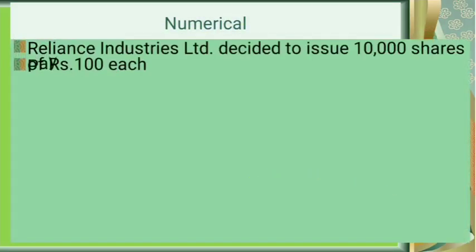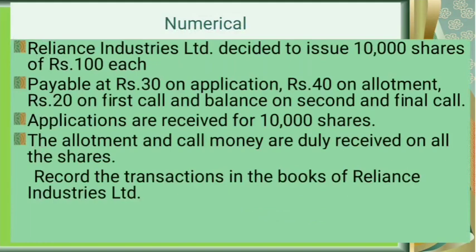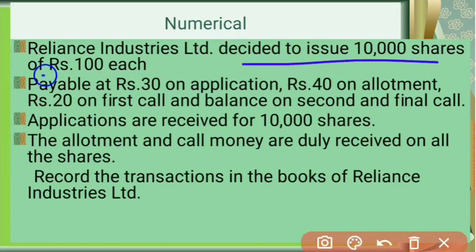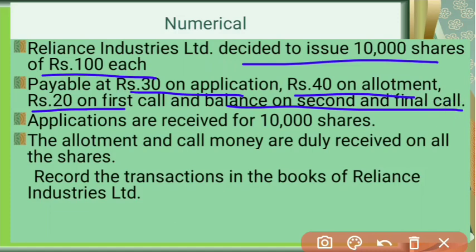Now let's look at a numerical question. Reliance Industries Limited decided to issue 10,000 shares of ₹100 each, payable as: ₹30 on application, ₹40 on allotment, ₹20 on first call, and balance on second and final call. So: 30 + 40 = 70, + 20 = 90, meaning the final call is ₹10.